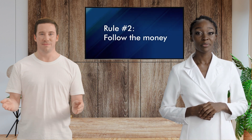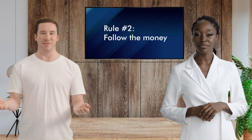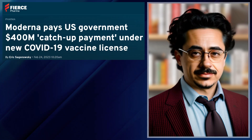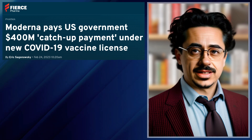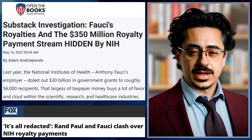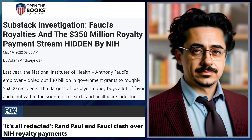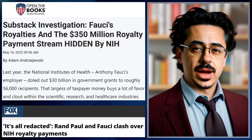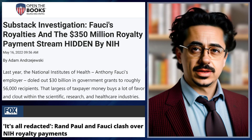Rule number 2 is follow the money. ChatGPT, did these guys make money off the pandemic? Pharmaceutical companies profited significantly from the COVID-19 pandemic, and paid royalties to an agency led by Dr. Anthony Fauci. In one instance, Moderna made a nearly half-billion-dollar payment. While redacted records suggest Fauci received personal royalty payments, specifics remain undisclosed. Additionally, this government agency grants roughly $30 billion annually to around 56,000 recipients.